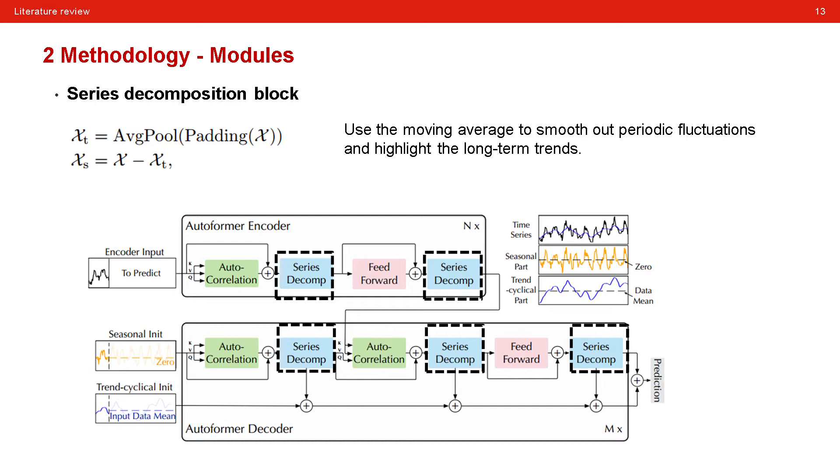First is the decomposition block which is quite straightforward. This block is used to distinguish the seasonal part and trend part of the input during the information process. Specifically, they use the moving average to smooth out periodic fluctuations and highlight the long-term trends.